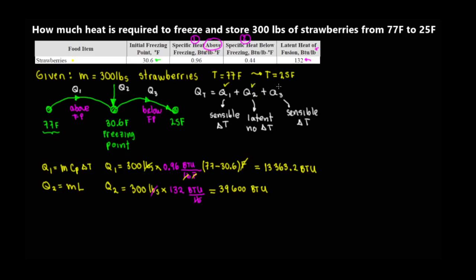Now Q3 — the strawberries are already frozen, and we continue cooling below the freezing point. Q3 = mass × Cp_below × ΔT. The mass is 300 pounds. The specific heat below the freezing point is 0.44 BTU/(lb·°F). The ΔT is from 30.6°F down to 25°F. So Q3 = 300 × 0.44 × (30.6 − 25) = 739.2 BTU.